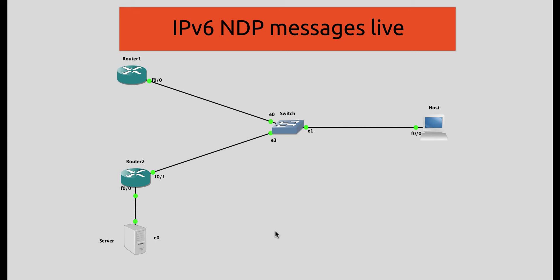Hello and welcome to this recording. Today we are going to demonstrate the five ICMPv6 messages used by NDP to provide functionalities like duplicate address detection, link layer address detection, and so on in IPv6.